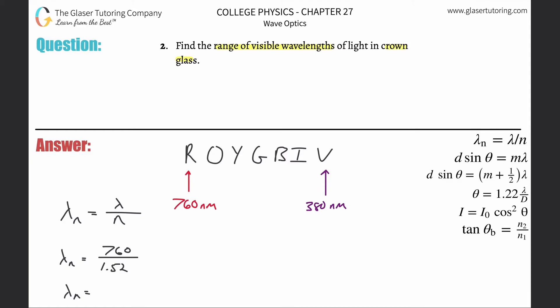All you have to do is take 760 divided by 1.52, and that's about 500 nanometers.